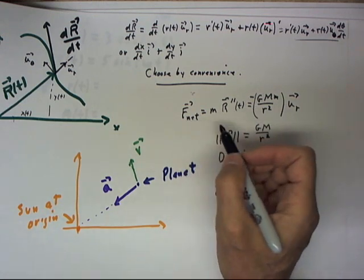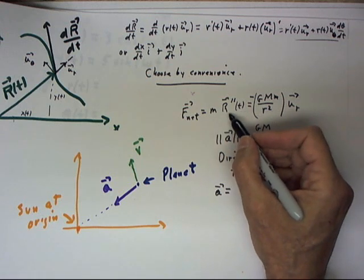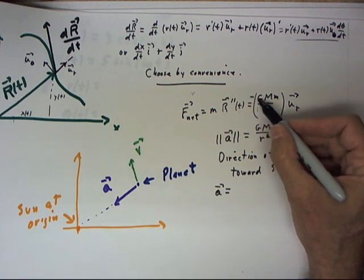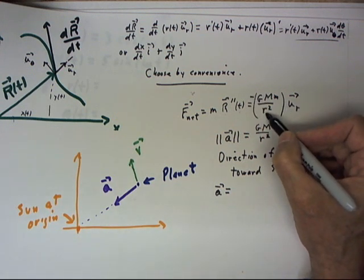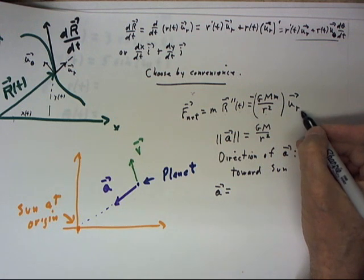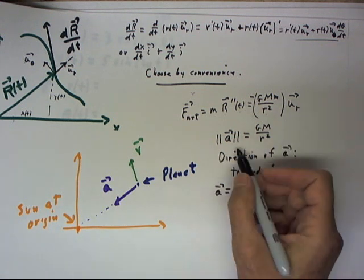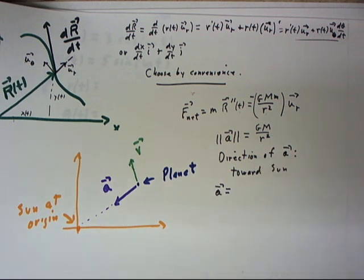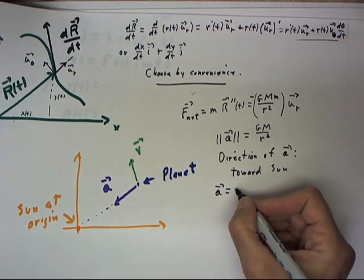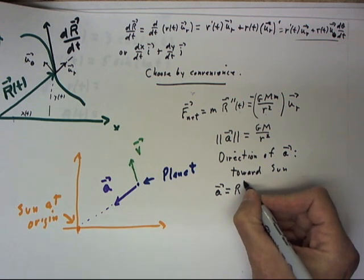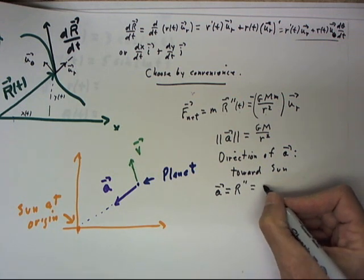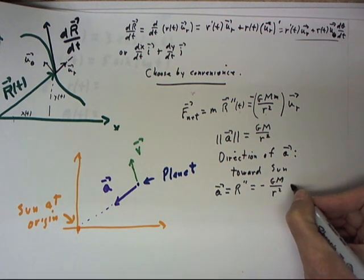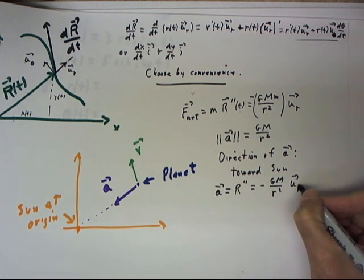So, magnitude of, well, the net force is mass times the second derivative of the position function, and that's going to be negative of this expression, which does involve r, multiplied by the u sub r vector. Now, the magnitude of A is gm over r squared, the direction of A is toward the sun. So we're going to say that A, which is our r double prime, is then equal to negative gm over r squared times our u sub r vector.